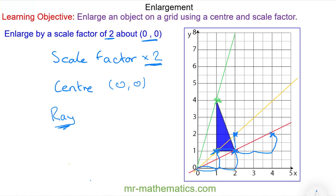And we'll do the final vertex at (1,4), which is one across and four up. So another one across and another four up. And again it lies along the same ray.